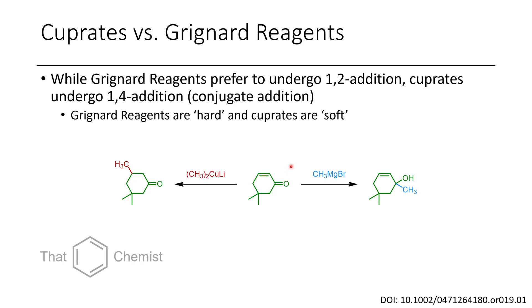So when we have a Grignard, they're hard. And so hard reactivity tends to prefer 1,2 additions in this case. Soft reactivity prefers to react at the alkene. Now the concept of hard and soft is used throughout organic chemistry. And so this is the first time I'm introducing it. And it's a topic that's worth considering because depending on conditions, you can get different reaction outcomes based on the hardness or the softness of the reagents that you use.